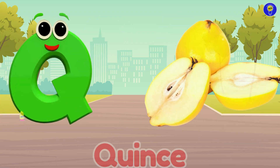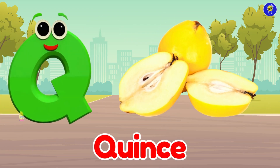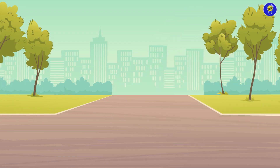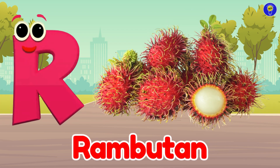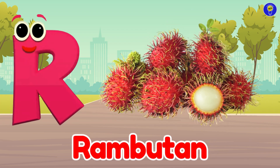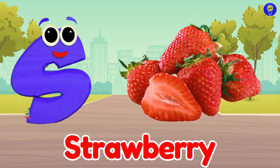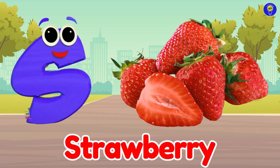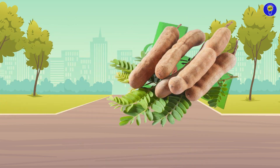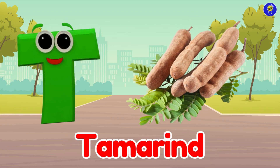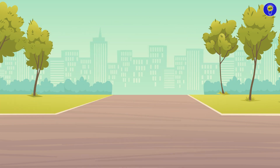Q is for quince. Quh, quh, quince. R is for rambutan. R, r, rambutan. S is for strawberry. Suh, suh, strawberry. T is for tamarind. T, t, tamarind.